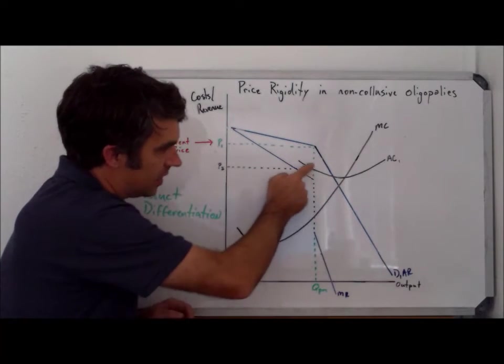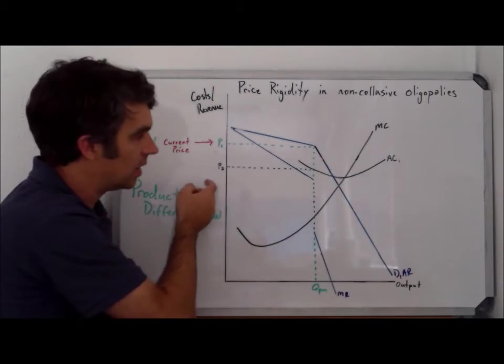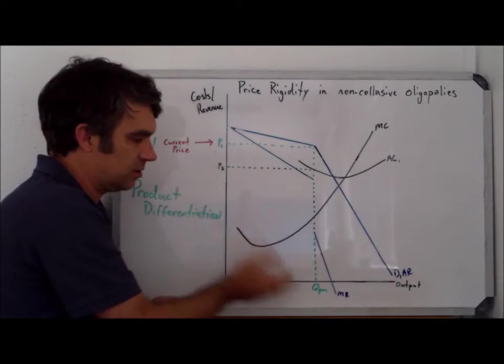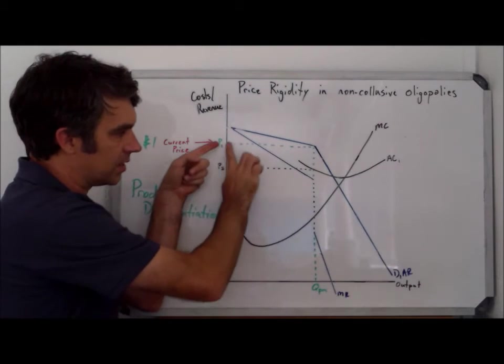Remember, marginal cost cuts through AC at its lowest point, which means this is going to be the average cost here at this quantity, and average revenue P1 is above it, P2. So this firm is making abnormal profit of P1 minus P2 times QPM, or the size of this rectangle here.